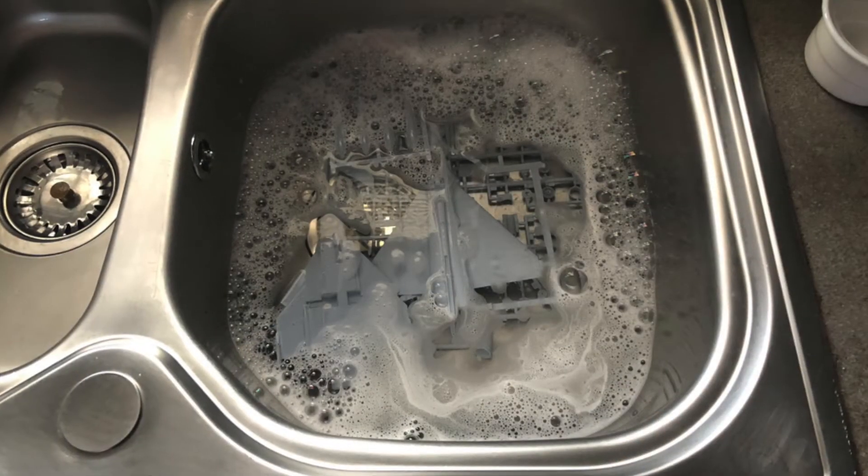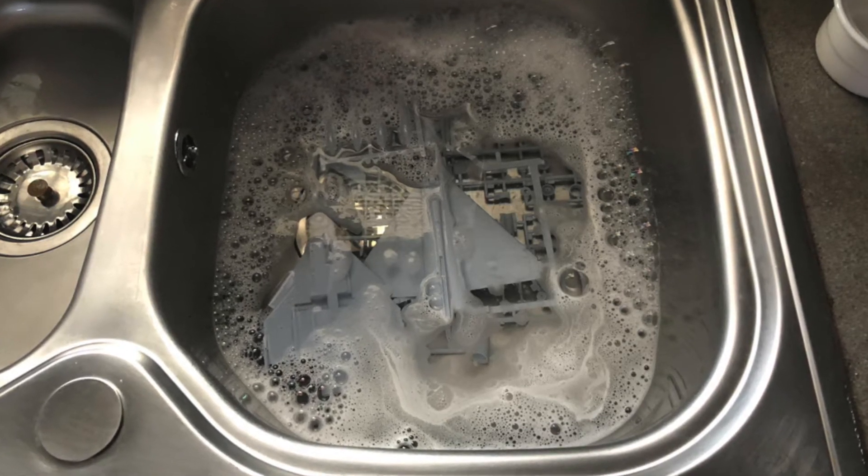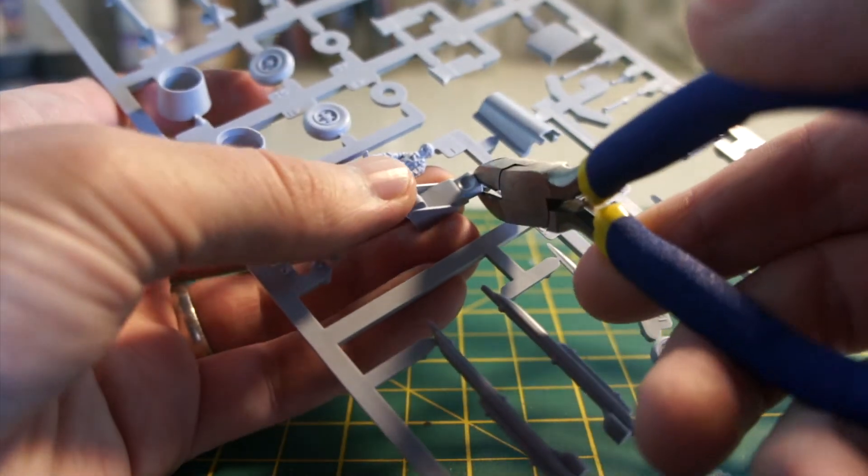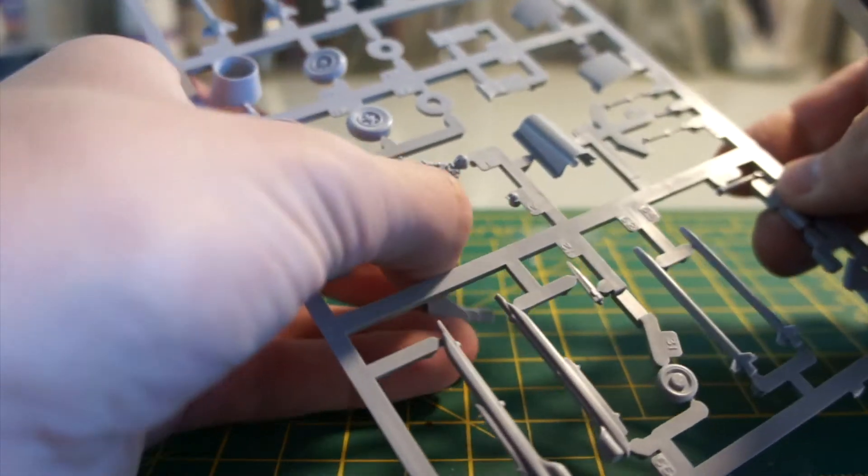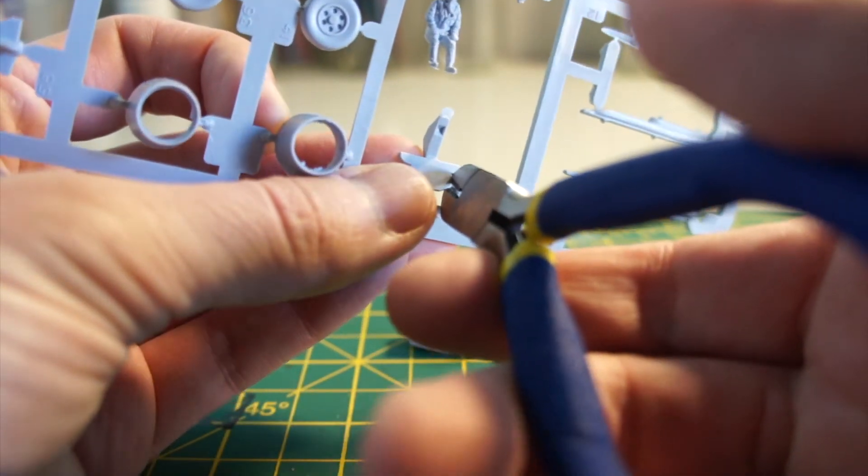I started by giving it a wash in some warm soapy water with a splash of vinegar just to get rid of any residue. Then I had my cutters and started with the cockpit. I would probably say the cockpit was the easiest part to put together, very basic and simple.